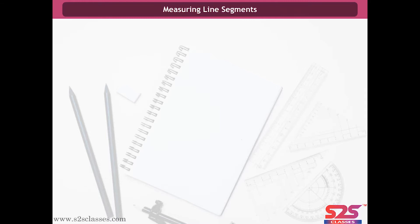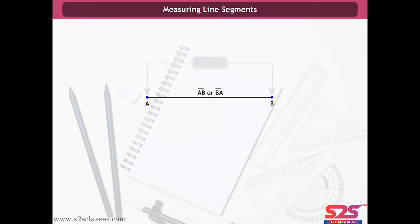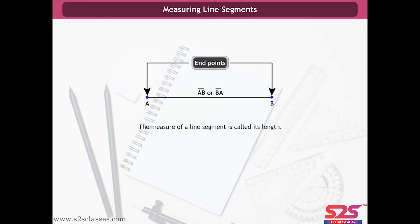Measuring line segments. In the earlier chapters, we have already studied about the line segment. It is a fixed portion of a line, hence it is possible to measure it. The measure of the line segment is called its length. Using this idea, we can compare line segments. We have different methods for comparing line segments.